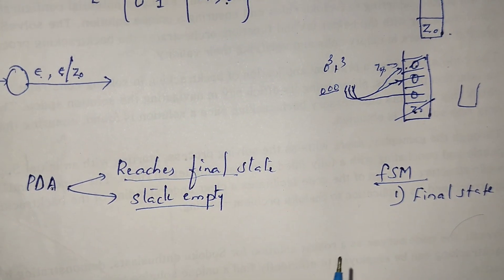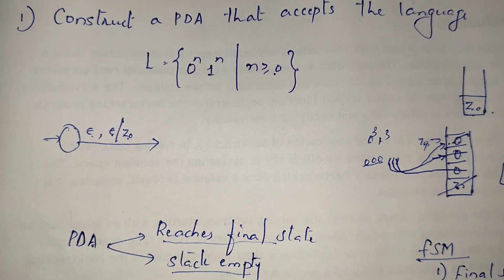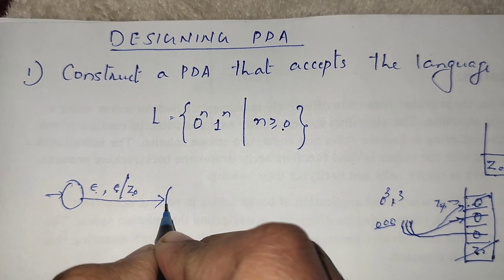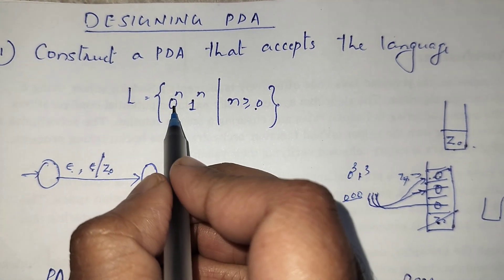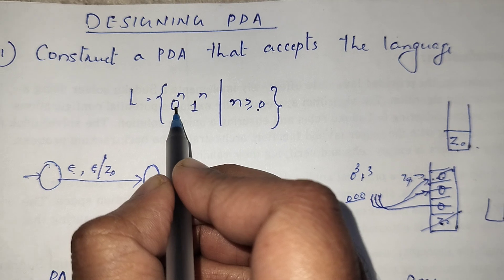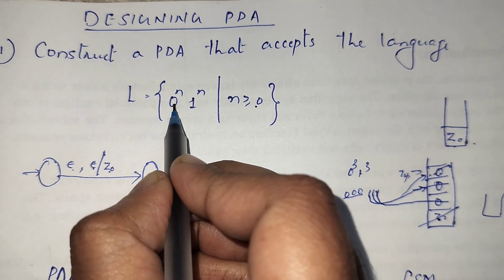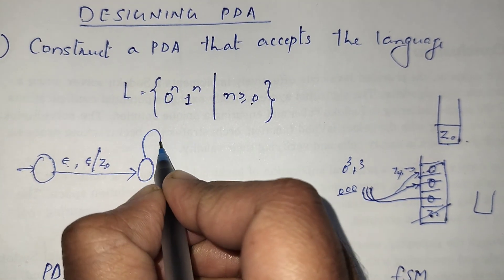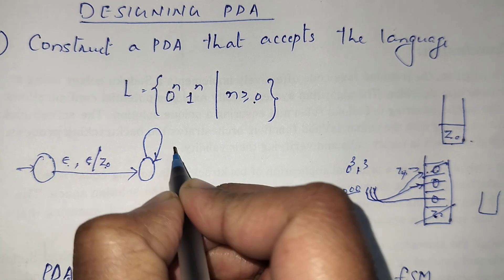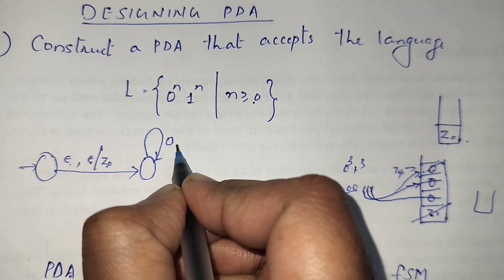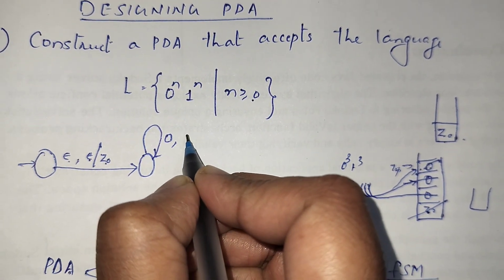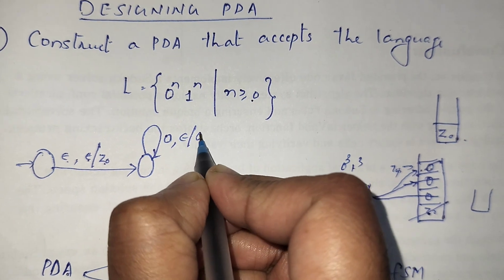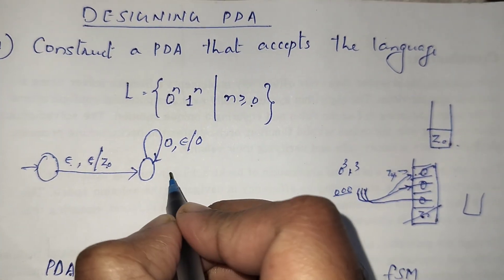So we can now design the machine. Whenever we are seeing zeros, we push zeros to the stack — any number of zeros. Whenever the input symbol is zero, we pop nothing, we are just pushing zero to the stack.